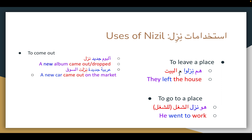Next we have nizl meaning for something to come out. For example, album gdeed nizl — a new album came out, or a new album dropped. Also, arabia gdeed nizl — a new car came out on the market. Notice again, no preposition between nizl and the object in these examples.